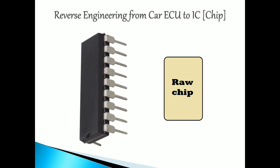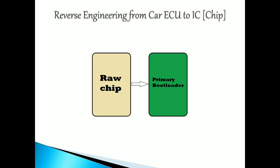Now we have come out of the reverse engineering process. We took the raw ECU chip, and in that raw chip we are implementing — that is, flashing — the primary bootloader. Who will flash this primary bootloader? When you go to a shop and buy a chip, you don't need to flash the primary bootloader yourself — it's already inbuilt.